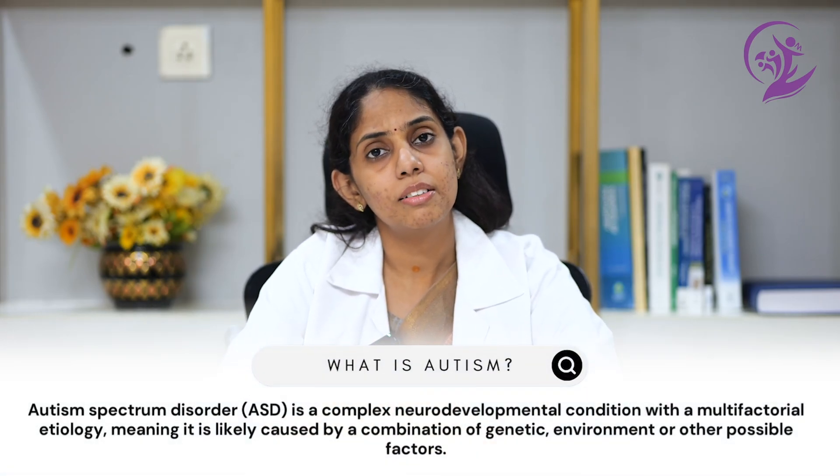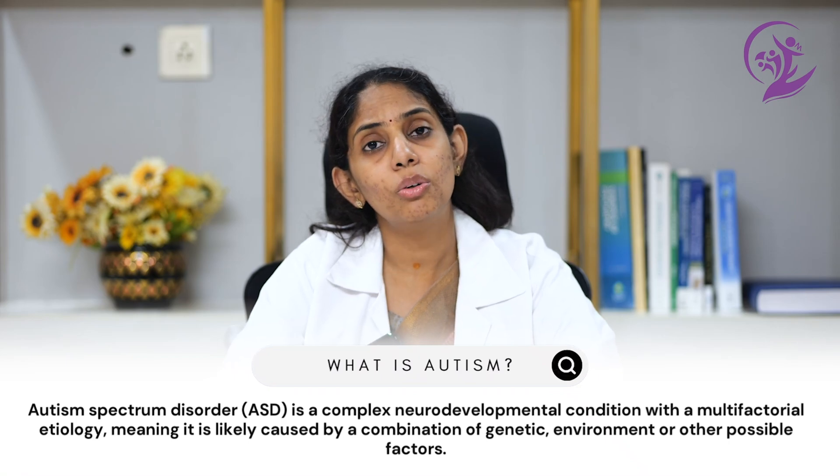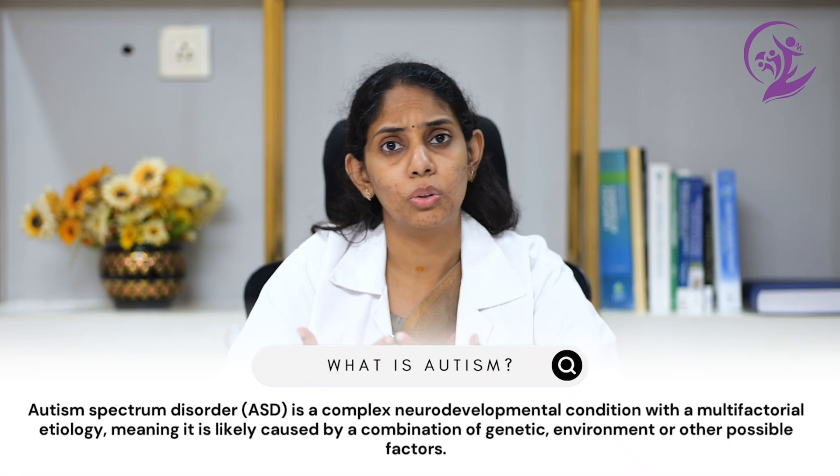So what is autism? Autism Spectrum Disorder is a complex neurodevelopmental condition with a lot of multi-factorial causes. What could be the multi-factorial causes? That could be genetics, that could be environment, or other possible factors. Until now, science has not revealed the precise cause for autism — it is still a mystery, in spite of so much advancement in science. With the research done until now, what we have are some factors which are categorized as possible reasons for autism, which has been seen worldwide in increasing numbers in children these days.